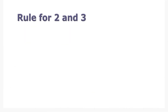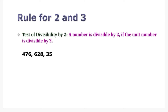Now let's see the divisibility rule for number 2 and number 3. When finding the test of divisibility by 2, remember this: a number is divisible by 2 if the unit digit is divisible by 2. In other words, if the number is an even number then it is definitely divisible by 2. Let's take 476 — you do not need to keep an eye on the hundreds and tens place, just the ones place. The digit is 6, and 6 is even, so 476 is divisible by 2.